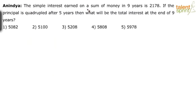The simple interest earned on a sum of money in 9 years is 2178. If the principal is quadrupled after 5 years, then what will be the total interest at the end of 9 years?